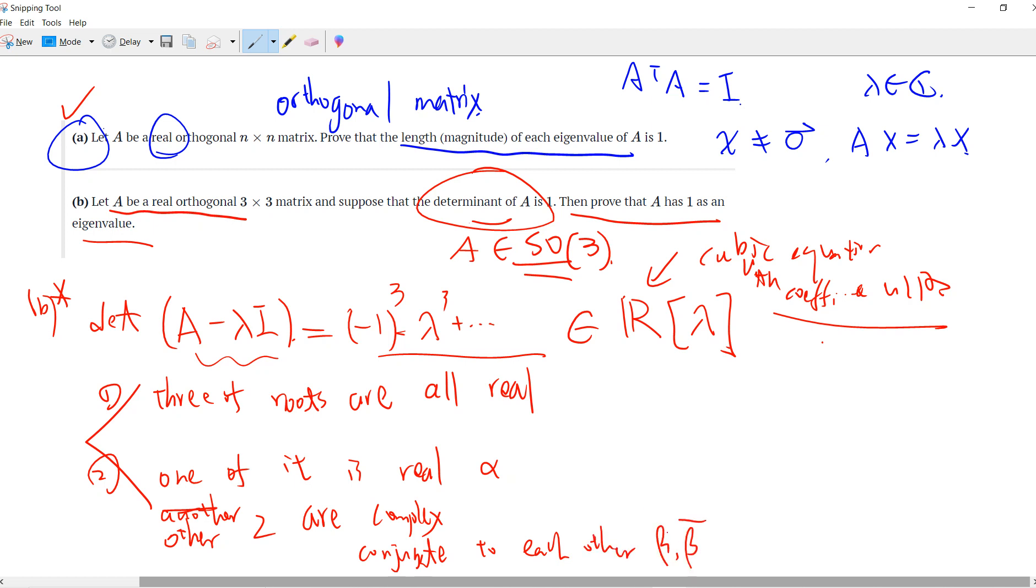We also know that the determinant of A is the product of eigenvalues. So in the first case, the determinant of A is alpha times beta times gamma equals 1.